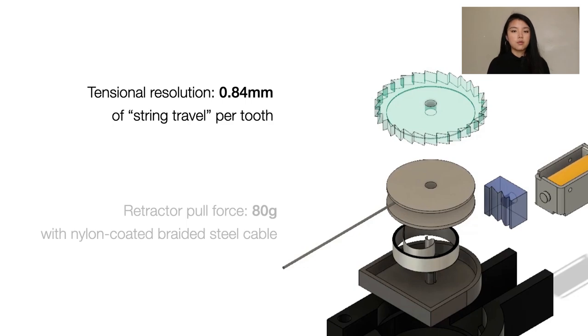We chose an 80-gram pull-force retractor, suitable for removing slack at typical human movement speeds, while not being overly distracting. The retractor comes with a steel cable that is both strong and wear-resistant.